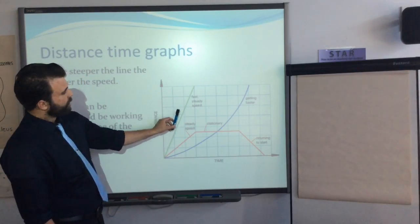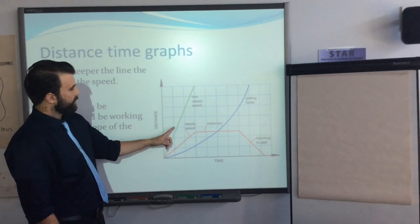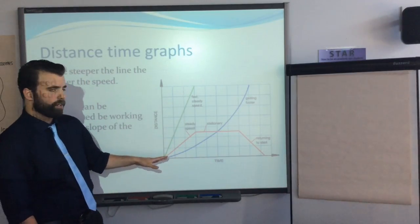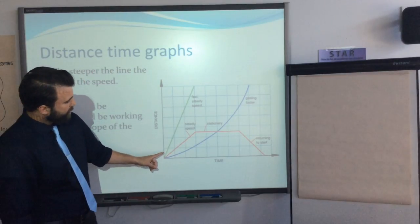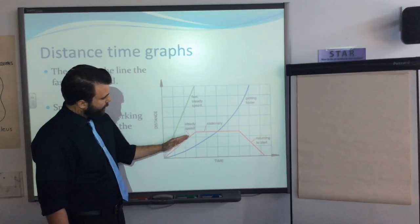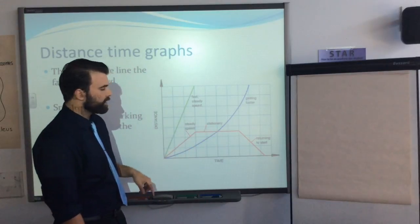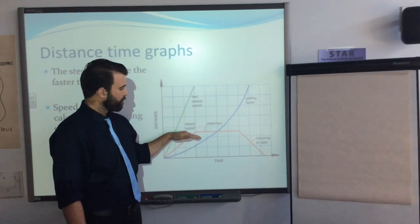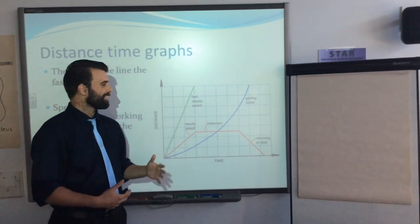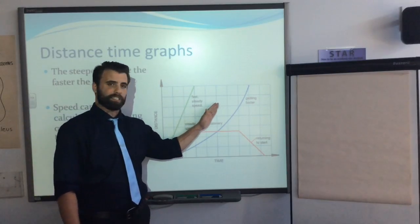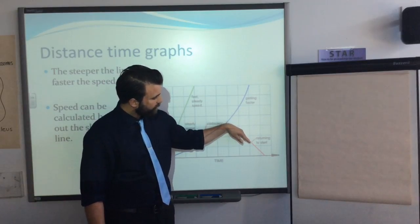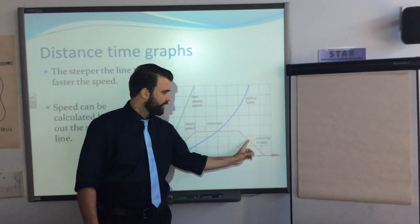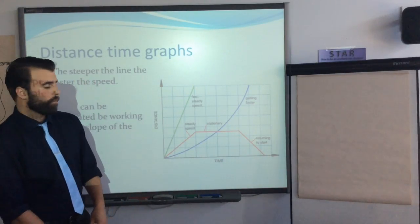On a distance-time graph, uniform motion at a fast steady speed shows as a straight line going up — distance is increasing over a set amount of time. A horizontal flat line means distance is no longer increasing, so the object is stationary. Then if the line starts to return towards the start, that tells us the object is going backwards — the distance is decreasing.